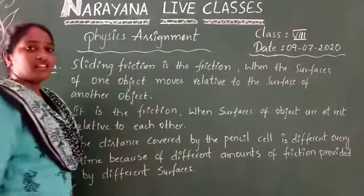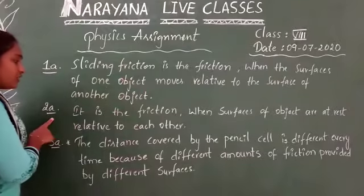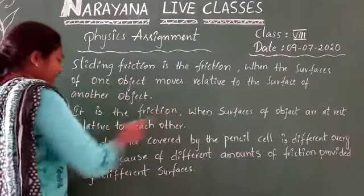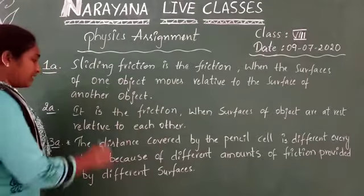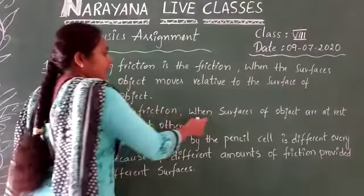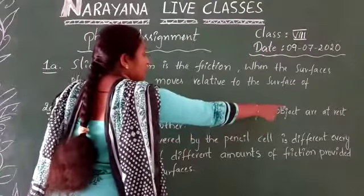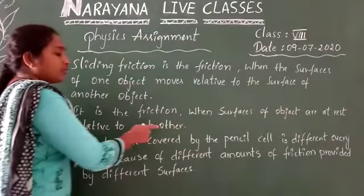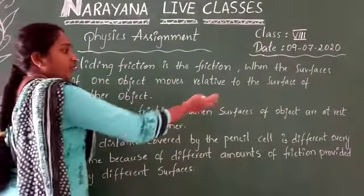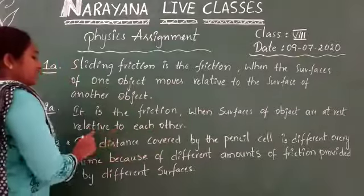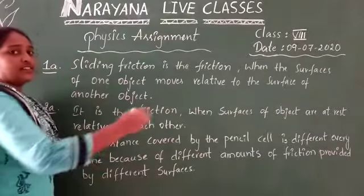And the second question is, define static friction. It is the friction when surfaces of objects are at rest relative to each other. So the surfaces of objects are at rest relative to each other surface.